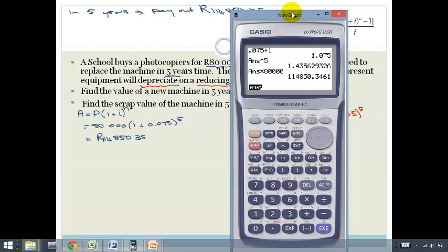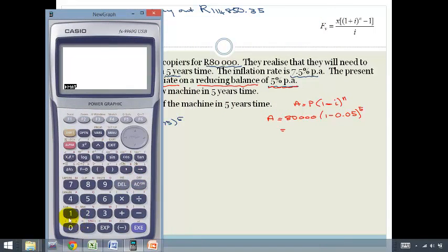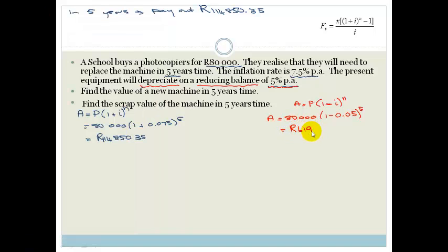So, if we get out our calculator, we can go 1 minus 0.05 equals 0.95 all to the power of 5, then we times it by 80. And that is 61,902.48. In other words, if we had to sell in five years' time, the selling price of our old photocopier is going to be 61,902.48.